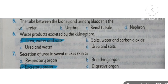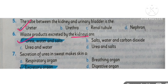MCQ number five: the tube between the kidney and the urinary bladder is the ureter. The next MCQ: waste products excreted by the kidney are urea, water, and salt.